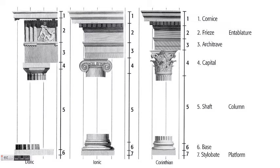One of these terms is entasis, which refers to the columns in all three of the orders, but especially in the Doric order. The columns swell just slightly and taper, so it's a little narrower at the top than at the bottom. In fact, it gets widest by just the slightest amount in the middle, around the bottom third, with a slight curvature — kind of bowing out first and then coming back in.